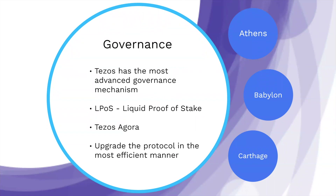If a proposal is submitted and your baker does not want to support it and will vote no, but you yourself want the proposal to go through, because of the unique nature of Tezos' governance mechanism, you can un-delegate your tokens instantly and delegate to another baker who does support your beliefs about where you want Tezos to go. Your tokens are never locked in — you can always move them freely whenever you want.